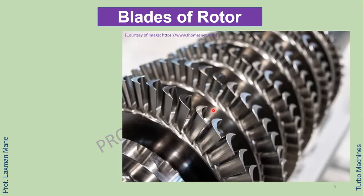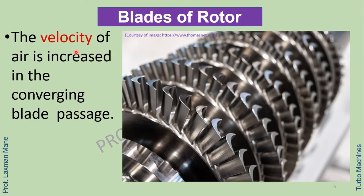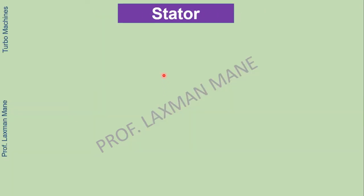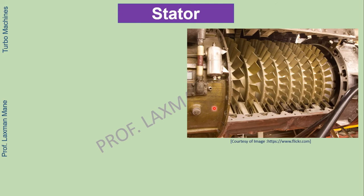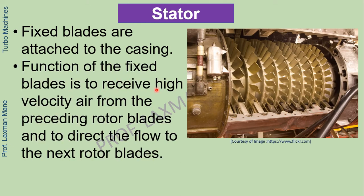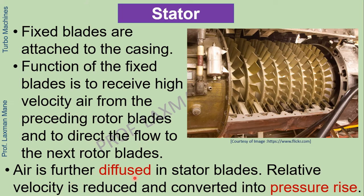Blades of rotor: from the image you can see that the velocity of air is increased in the converging blade passage. These are converging blade passages. Air then flows to the next rotor blades, where it is further diffused in the stator blades. Here the relative velocity is reduced and converted into a pressure rise.